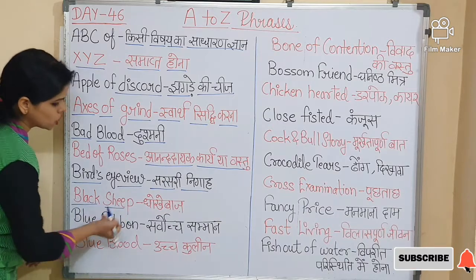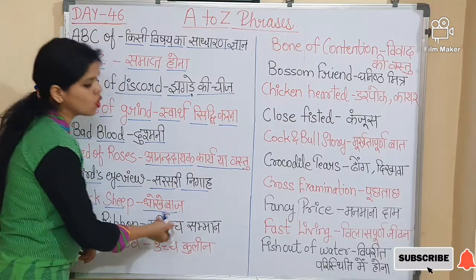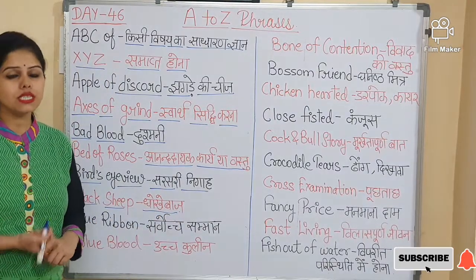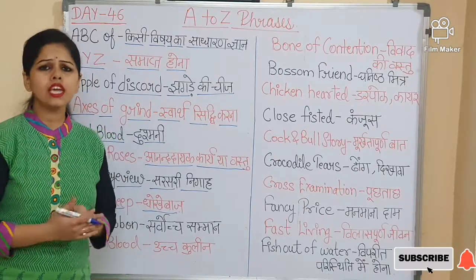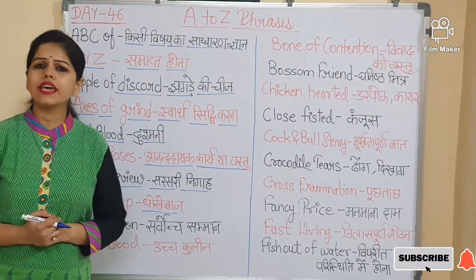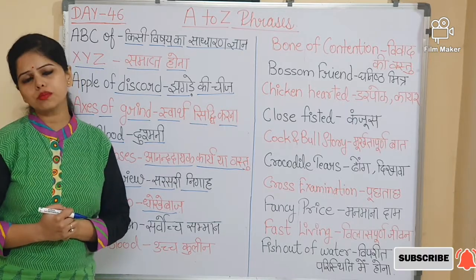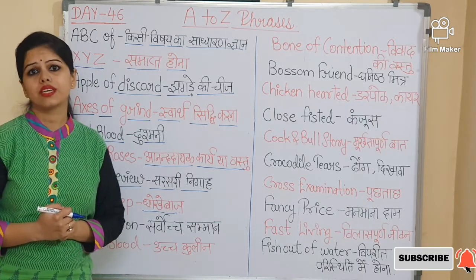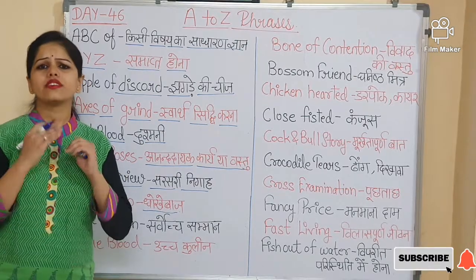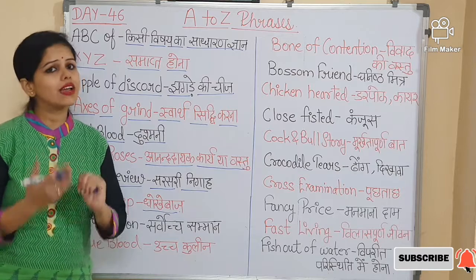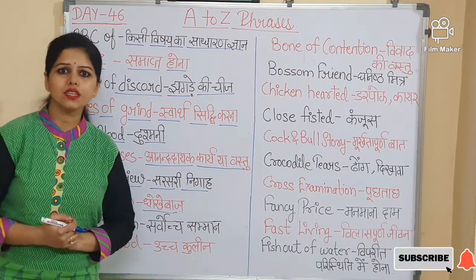Now next is 'Black sheep'. Black sheep means dhokebaz — a deceiver or a person who causes trouble. The sentence is: He was my best friend. I shared everything with him, but at last I came to know that he is a black sheep.